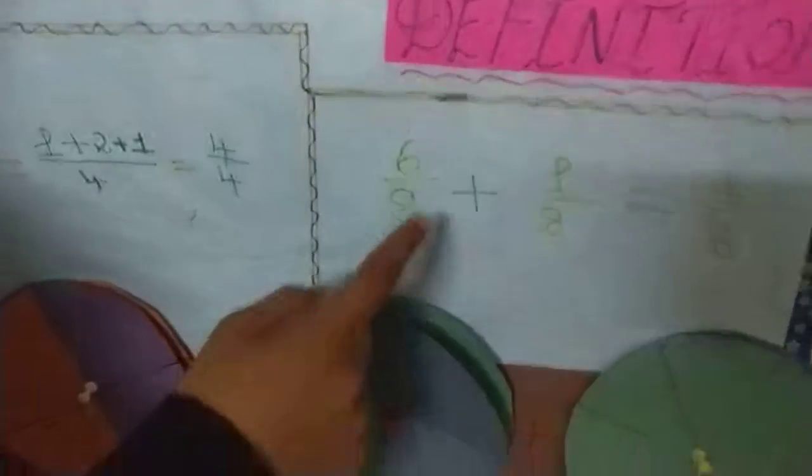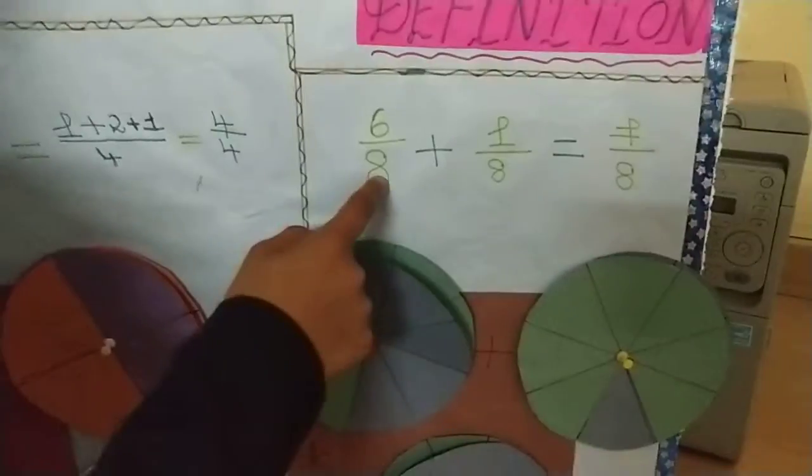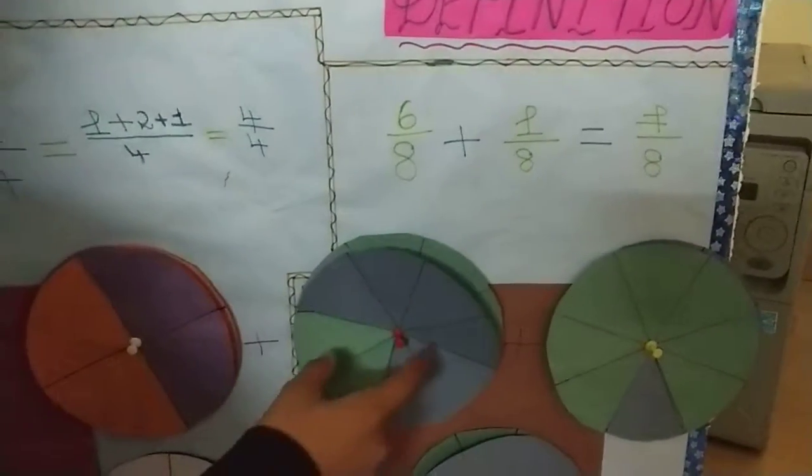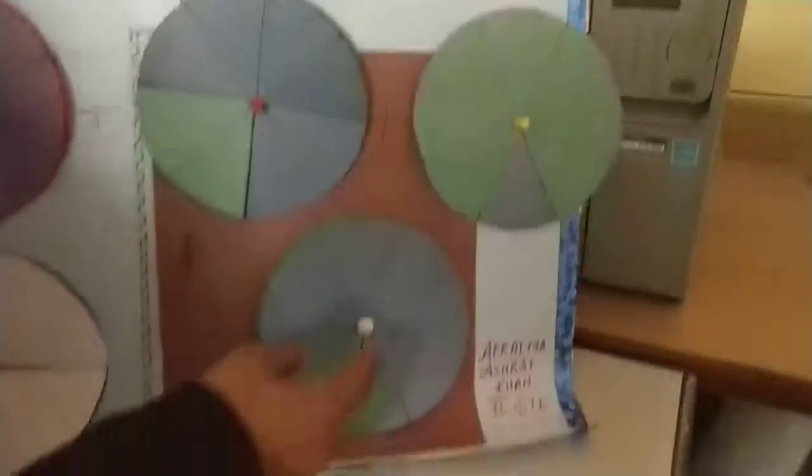And the same thing we are going to do here. It is also a like fraction because the denominators are the same here. 6 plus 1 is equal to 7. 6 by 8, 1 by 8 and 7 by 8.